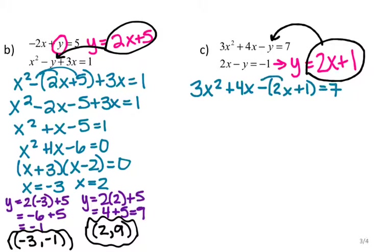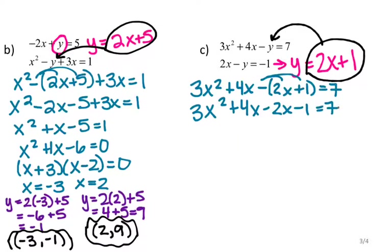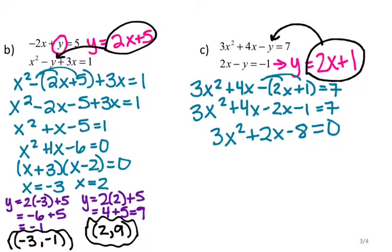Distributing the negative into the parenthesis gives 3x squared plus 4x minus 2x minus 1 equals 7. Combining like terms: 3x squared plus 2x, and I'll subtract 7 from both sides to get it equal to 0: 3x squared plus 2x minus 8 equals 0.